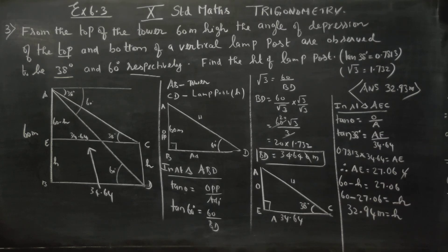Multiplying 0.7813 into 34.64 gives the result to several decimal places. The height of the lamp post is equal to 32.94 meters approximately.